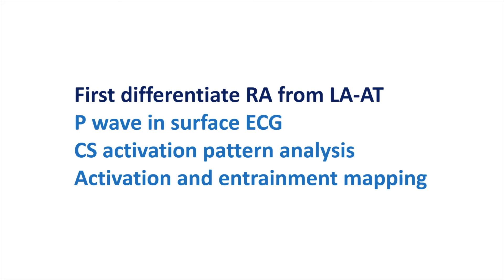Before looking at the ECG of our patient, we have to remember that the first important step is to differentiate right atrial tachycardia from left atrial tachycardia. To do that, we use P-wave morphology on surface ECG, CS activation pattern analysis, and activation and entrainment mapping. We have to remember that even with a proximal-to-distal CS activation, 73% of these tachycardias are left atrial and 23% are right atrial.